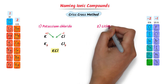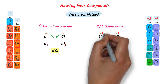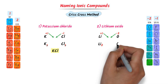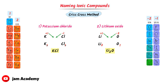Consider lithium oxide. The symbol of lithium is Li and oxygen is O. Lithium is in the first group, so it carries +1 charge. Oxygen is in the sixth group, it carries −2 charge. According to the criss-cross method, crossing the charges gives lithium 2 and oxygen 1. We do not write 1 as a subscript, so we get Li₂O — lithium oxide. By this method we can easily write formulae of ionic compounds.